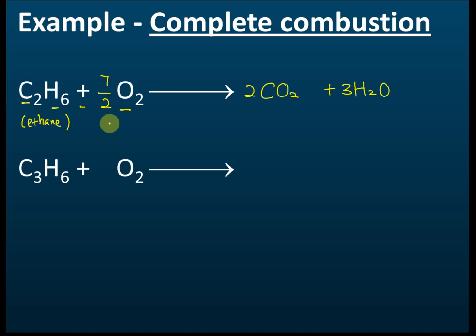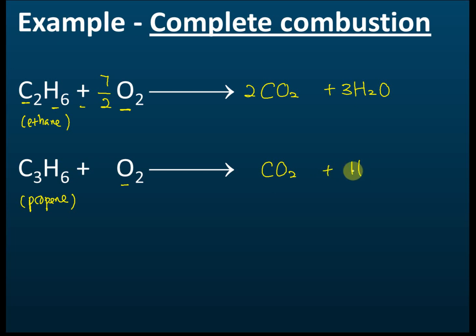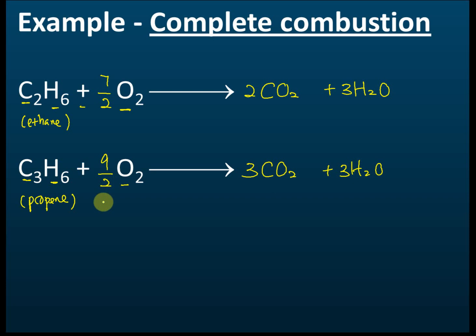Another example: propene (C₃H₆). For complete combustion, we add oxygen and the products are carbon dioxide and water. To balance: three carbons give three CO₂, six hydrogens give three H₂O. We have three oxygens from water and six from CO₂ — nine total — so the coefficient for oxygen is 9/2 O₂. The equation is now balanced.